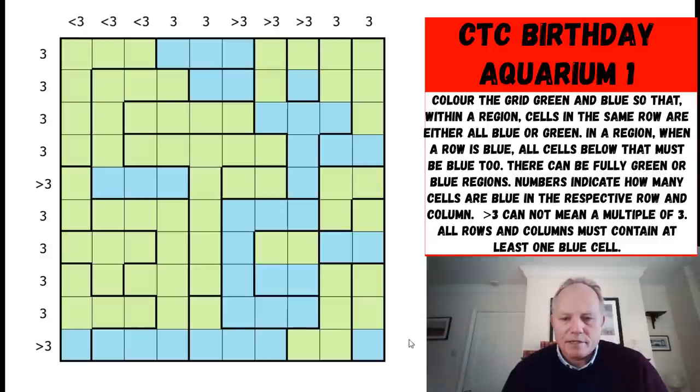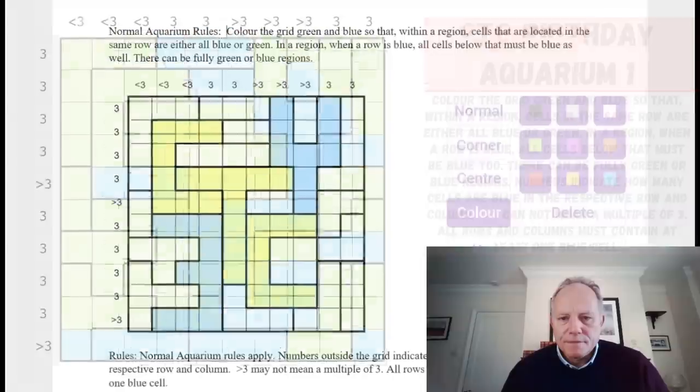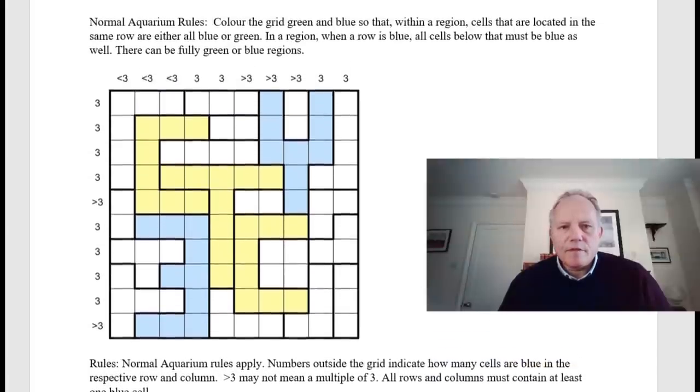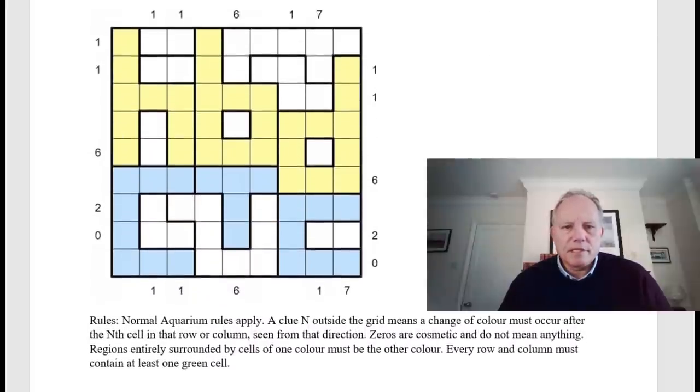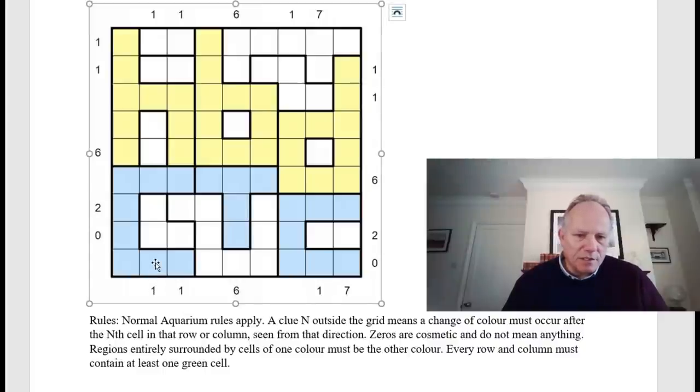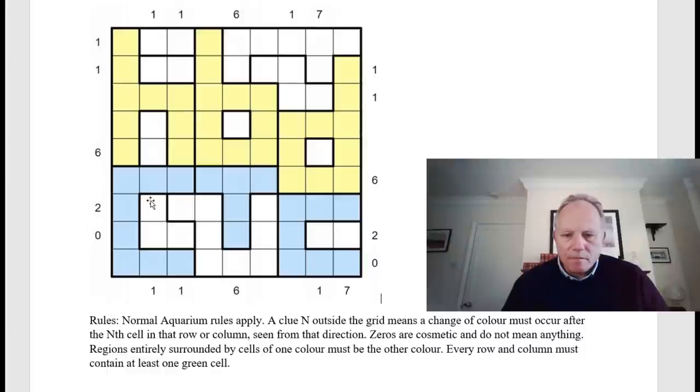Now let's have the rules for his second puzzle, which I'm going to do as well, which will also be on a link under the video. So remember that the normal aquarium rules apply. But this time, the numbers outside the grid mean something else. A clue n outside the grid means a change of color must occur after the nth cell in that row or column seen from that direction. So I guess for this one, there must be a change of color after the first cell in that column going that way. Zeroes are cosmetic and do not mean anything.